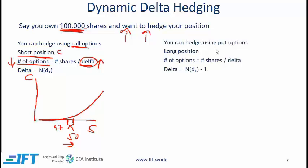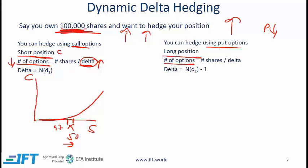Your position can also be hedged using put options. If the stock price goes up, the value of the put goes down, and vice versa. Therefore, to hedge a long position in shares, you need long puts. The number of put options is again the number of shares divided by Delta, but the Delta for a put is different. If you are given the N(d1) number, then Delta is approximately equal to N(d1) minus 1.